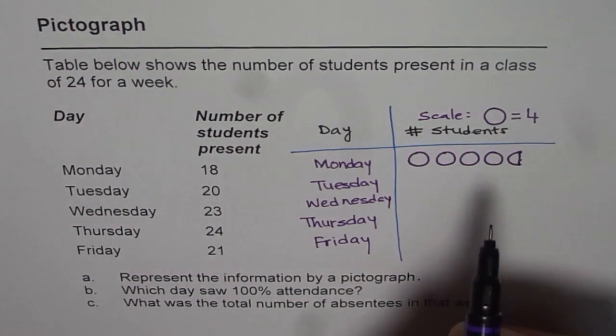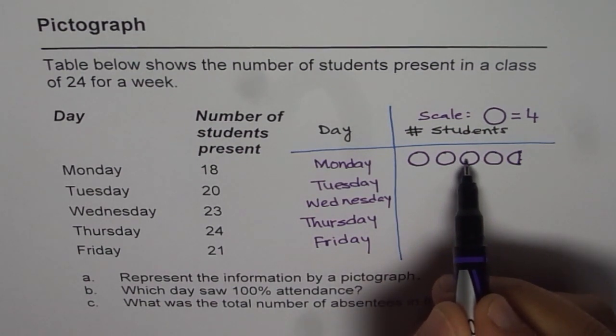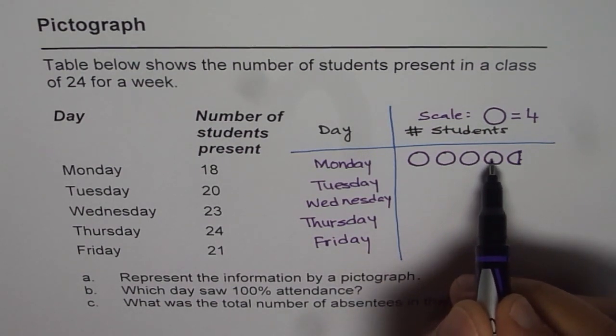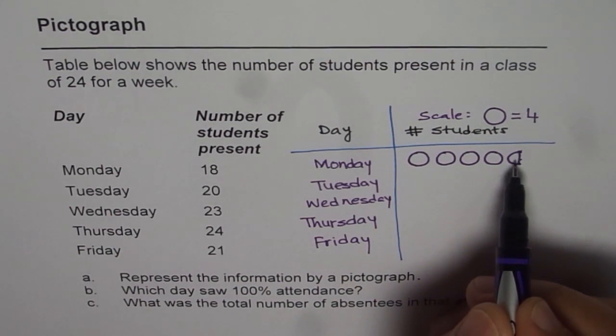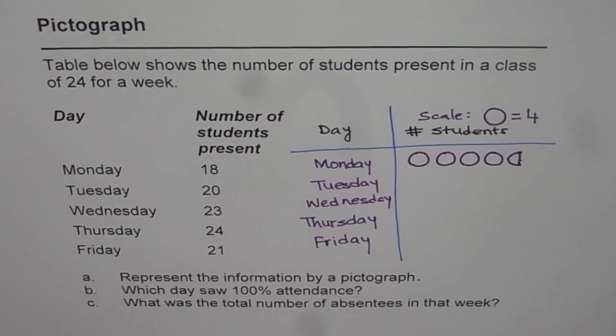Now this becomes 18. 4 plus 4 is 8, 8 plus 4 is 12, 12 plus 4 is 16 plus 2. Half the circle becomes 2 students and that represents 18 students.